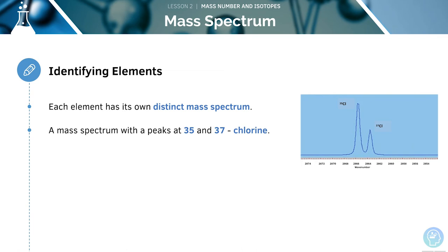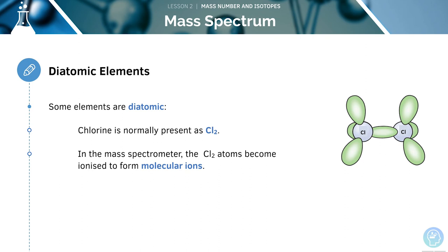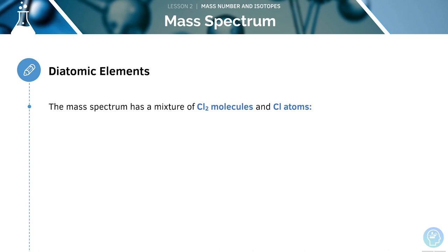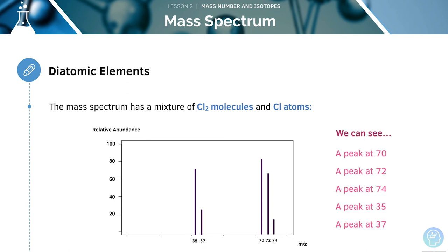Mass spectra can be used to identify elements since each element has its own distinct mass spectrum. When we see a mass spectrum with peaks at 35 and 37, we know it's chlorine. Some elements are diatomic — for example, chlorine is normally present as Cl₂. In the mass spectrometer, the chlorine atoms become ionised to form molecular ions. These ions are quite unstable, so they often split up to give chloride ions. Therefore the mass spectrum has a mixture of chlorine molecules and chlorine atoms.